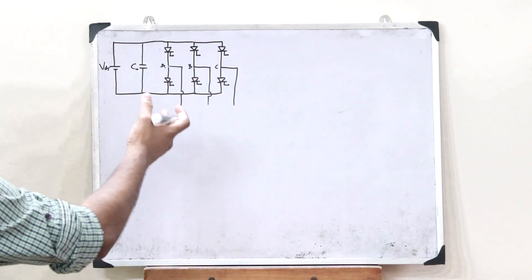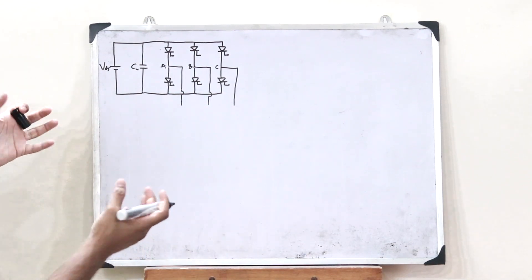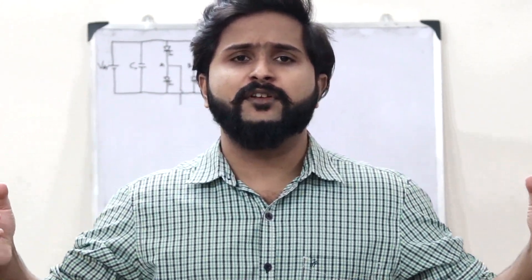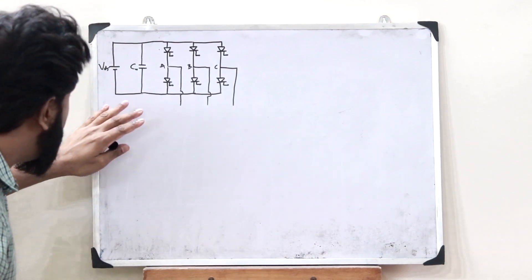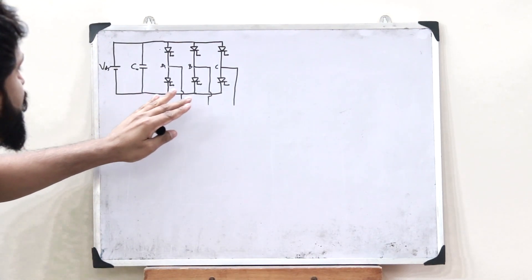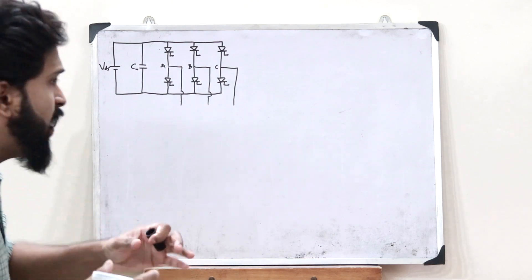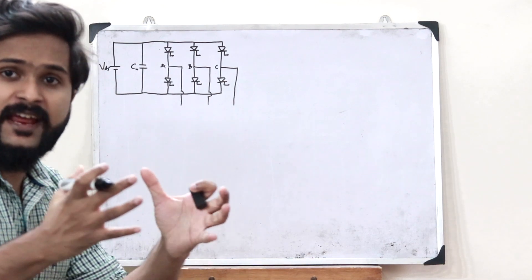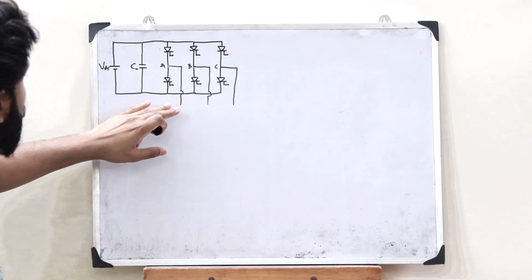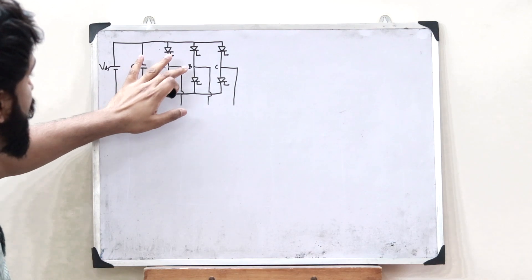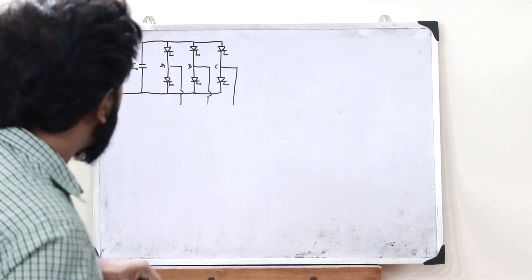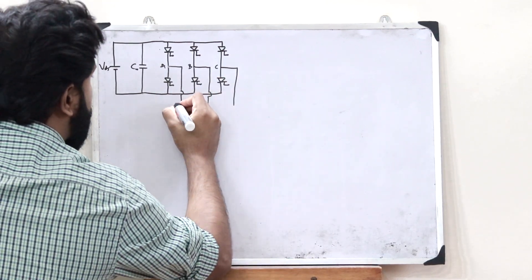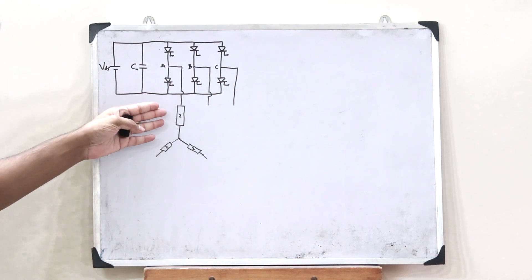In the previous video, we saw the basic circuit diagram of a three-phase inverter. If you haven't watched that video yet, please do watch it — I'll leave the link in the description below. This DC voltage is converted into a three-phase AC output. We are getting three outputs: one from phase A, one from phase B, and one from phase C. Let us attach the output of these three phases to three loads with impedances Z connected in the star configuration.